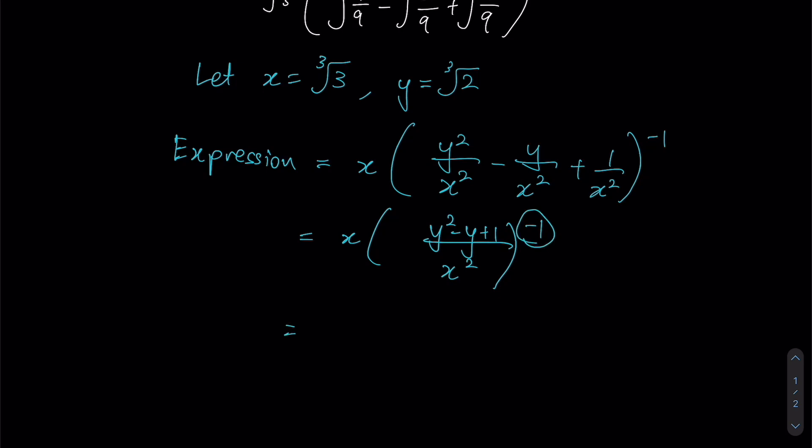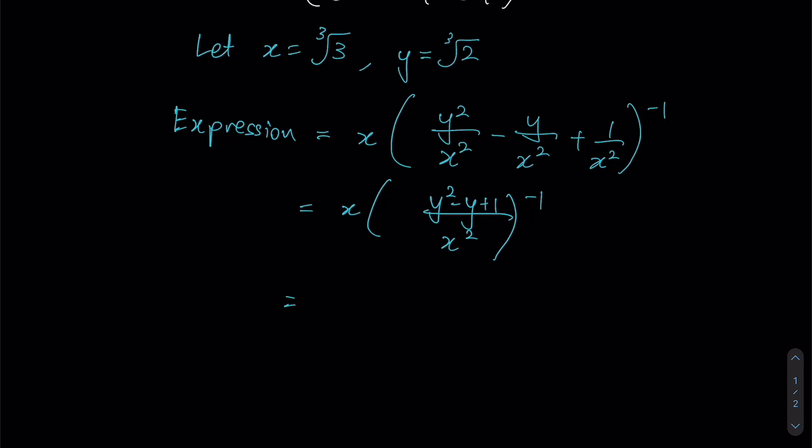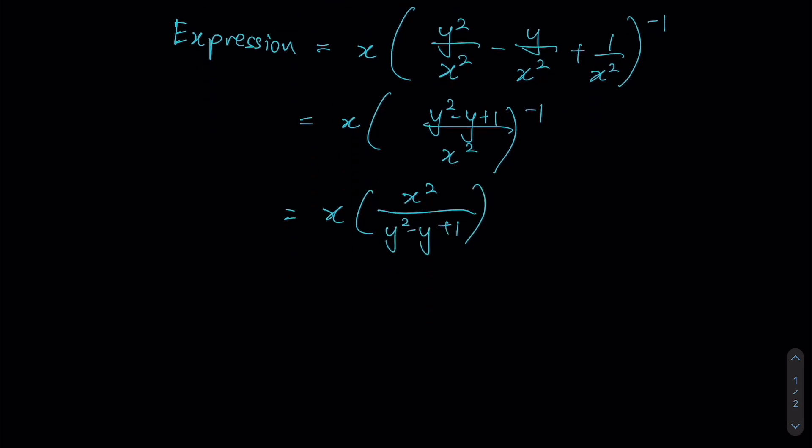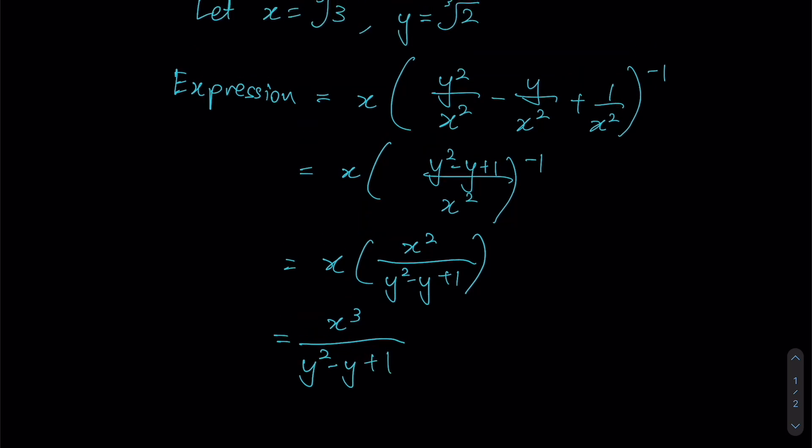So now is when we can start talking about negative 1. Any expression taken to the power of negative 1 is essentially saying that we just need to take the reciprocal of this, which means we are essentially flipping the fraction around in this manner. So therefore, I can now multiply x towards the top to give us x cubed over y squared minus y plus 1.